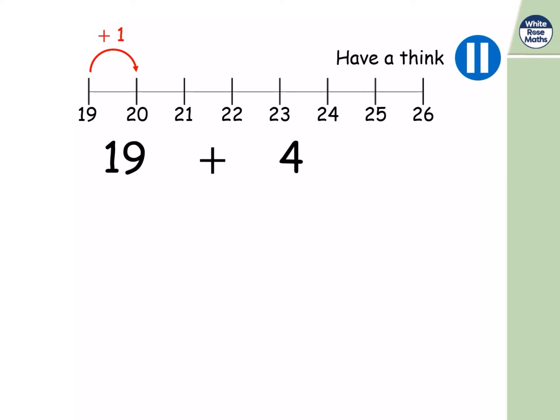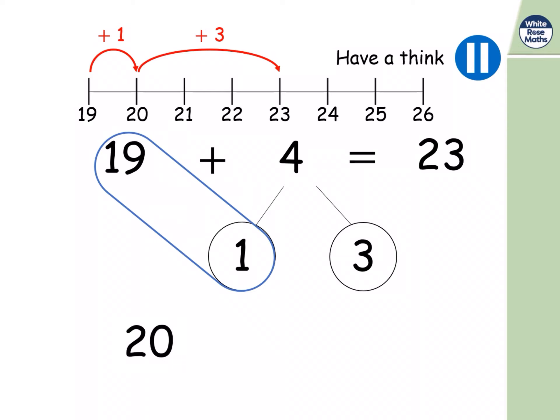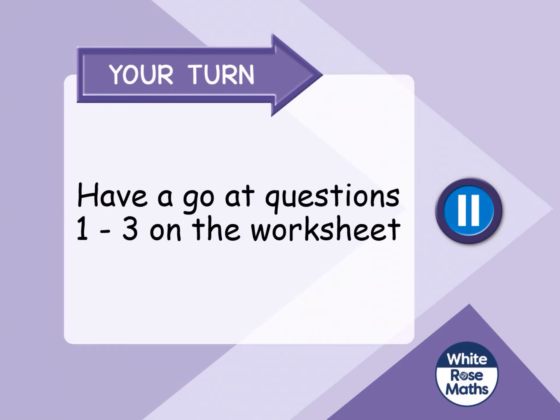I've jumped on the number line to the next ten. Done a jump of one. And my second jump is a jump of three, because one and three make four. I've ended up on twenty-three. What I've done is partition my four into one and three. Nineteen plus one making a bond to twenty. That's my jump to twenty. And then an extra jump of three, because I have three left over. Twenty plus three. Being equal to twenty-three.